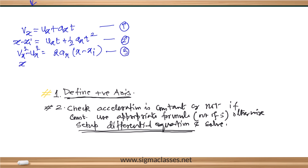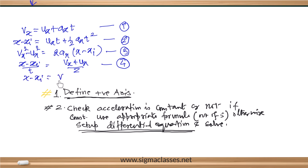The fourth formula is: (x − xi)/t = (vx + ux)/2. And the fifth is: x − xi = vx·t − ½·ax·t². Based on what is given and what is unknown, choose the appropriate formula from these five. Otherwise, set up a differential equation.